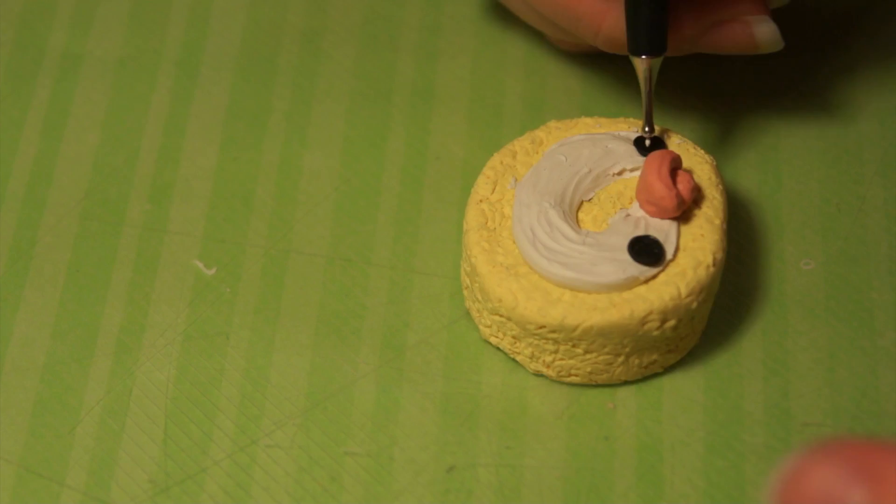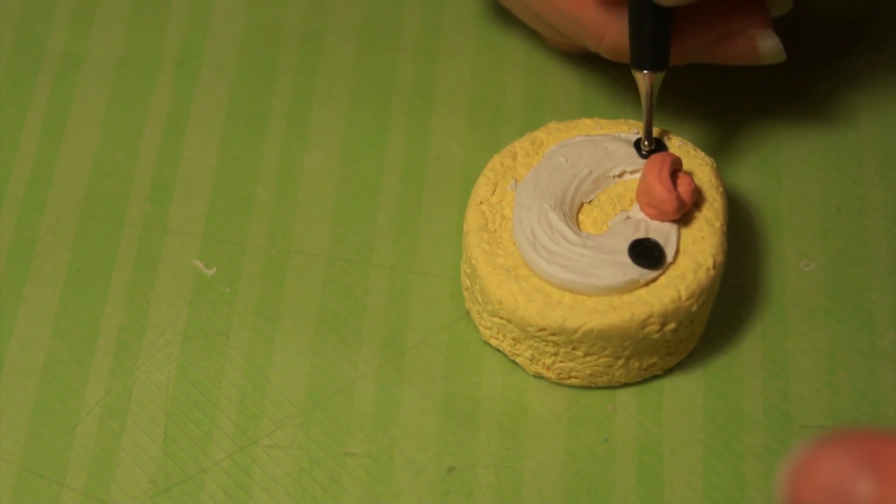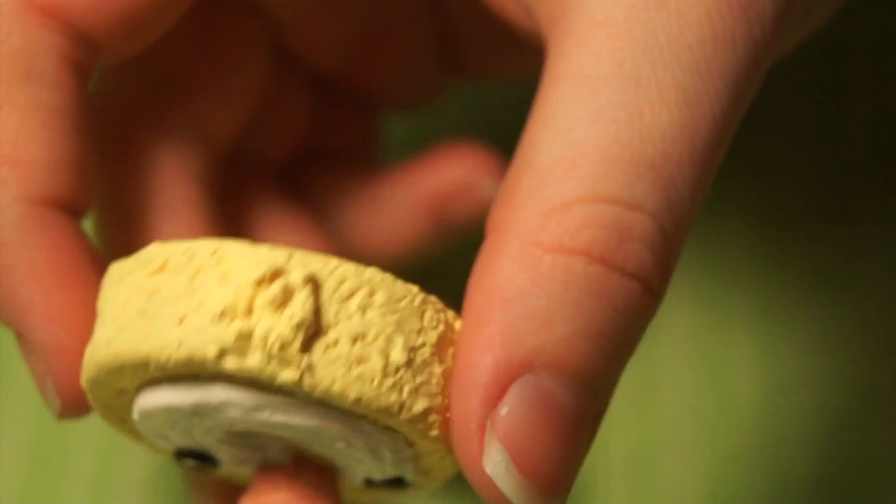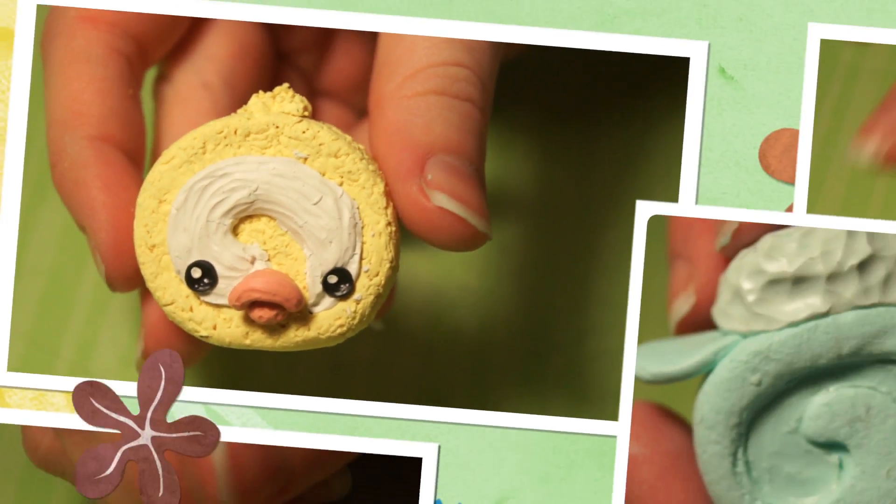Then I decided that I wanted to add my eyes in clay, so I just added two little black dots and then I went ahead and added two little white specks to give it a little bit more dimension. Also, I almost forgot, don't forget to add his little scruff at the top of his head.